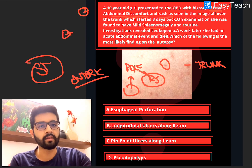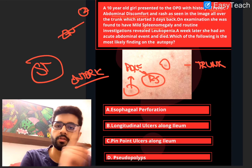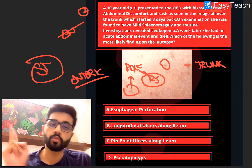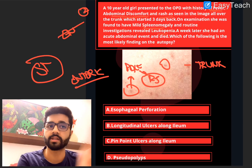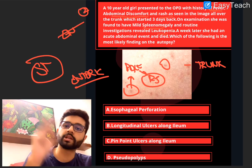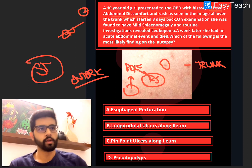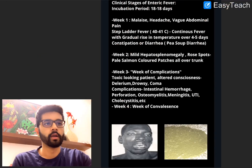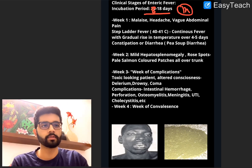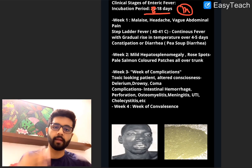Now we know the diagnosis is enteric fever. To answer this question, you need to know three things: first, what the diagnosis is — enteric fever. Second, what are the clinical stages of enteric fever, so we know which stage this girl belonged to. And third, what are the pathological changes and complications seen in enteric fever. The incubation period is 8 to 18 days — just remember 14 days or 2 weeks. And there are 4 important weeks, with different events happening in a week-wise manner.